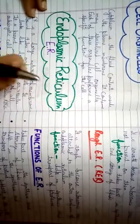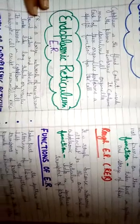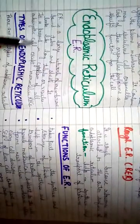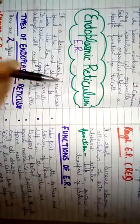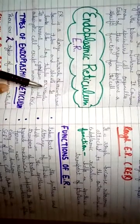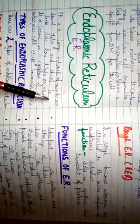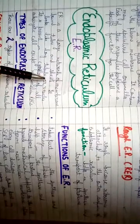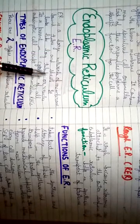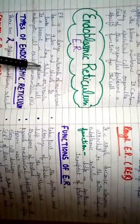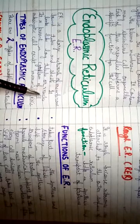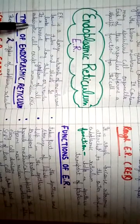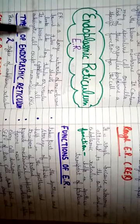First we will discuss about the endoplasmic reticulum. The endoplasmic reticulum is a large network of membrane-bound tubes and sheets — it is composed of tubes and sheets and looks like long tubules or vesicles. It is present in the cytoplasm of all eukaryotic cells.